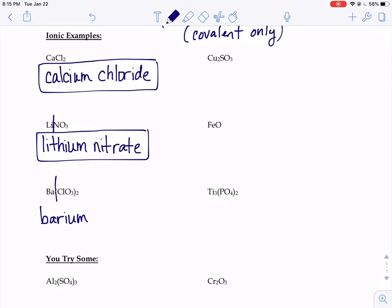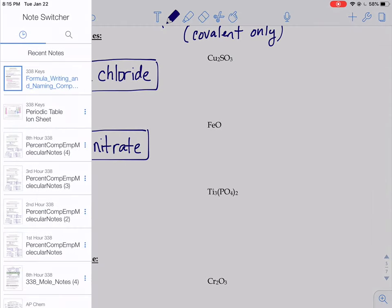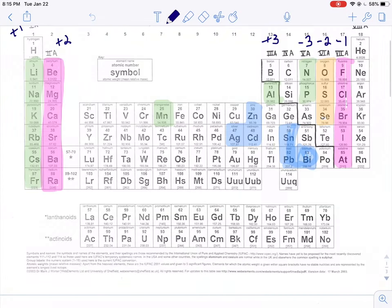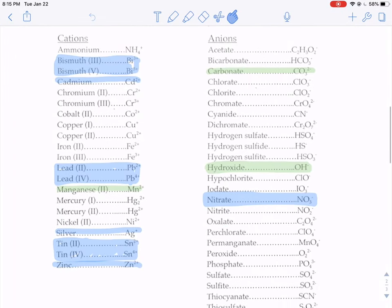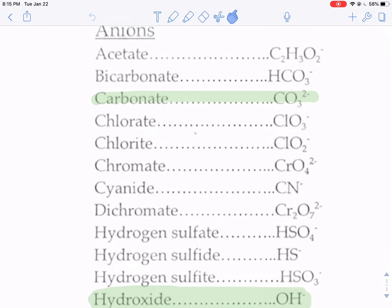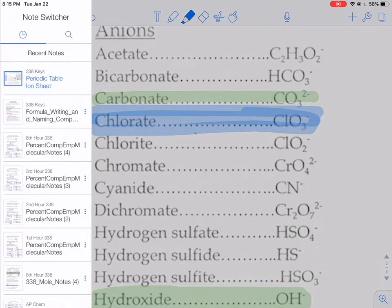What about the ClO3 too? There's multiple elements there. So we're going to need to look at our ion sheet to know what to call it. ClO3 too. When you look on your ion sheet, you might look here and say, I see ClO3. But it doesn't say ClO3 too. ClO3 is called chlorate. So what do we do?